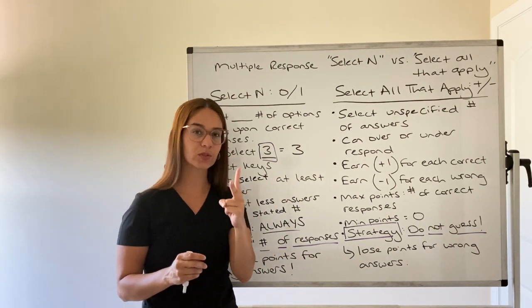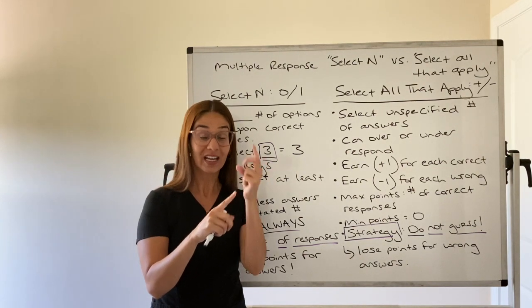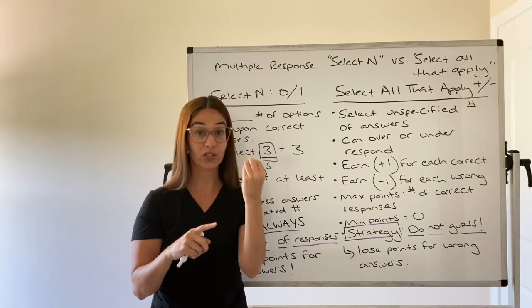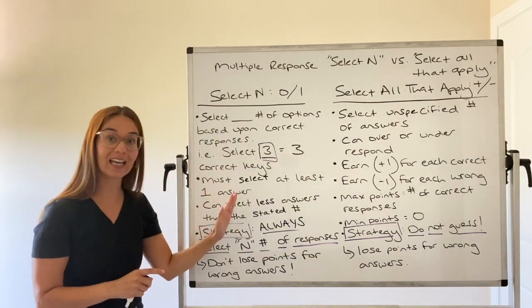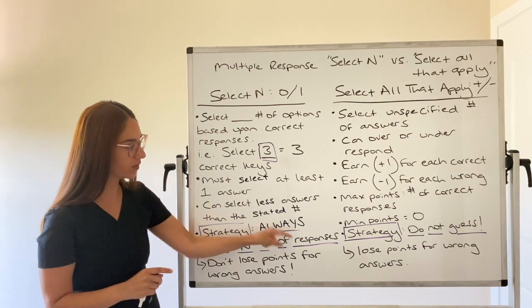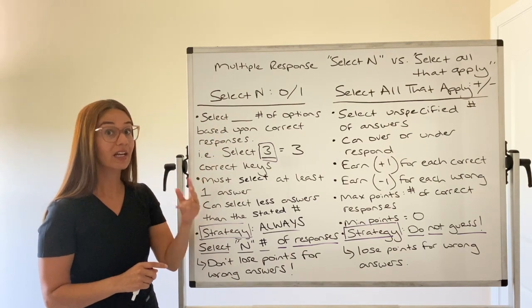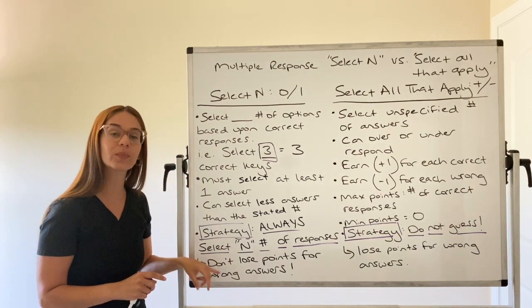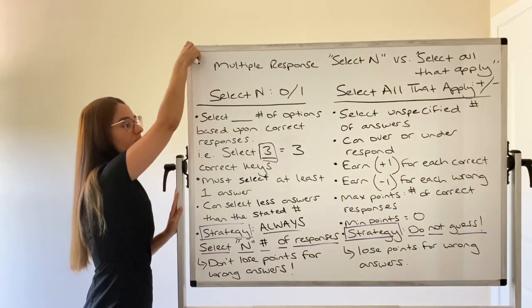So your strategy for select all that apply, please do not guess. Your strategy for select N, I need you to always select the N number of responses. So if it says select two, you should select two responses, even if you don't absolutely know. If it says select three, select three responses because you do not lose a point if you guess it wrong. That's our strategy. And you'll understand better once we do an example.